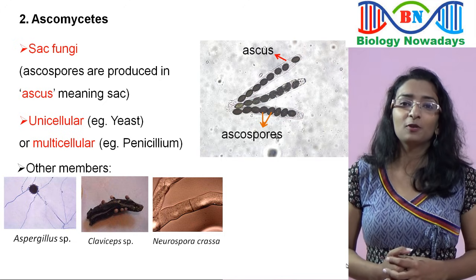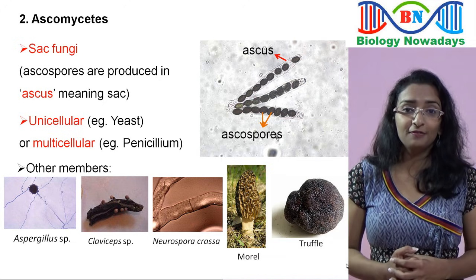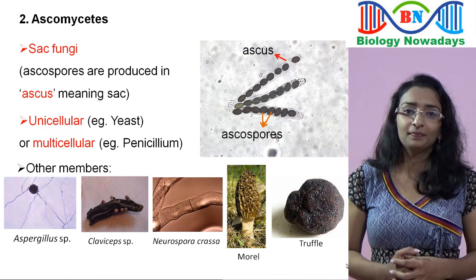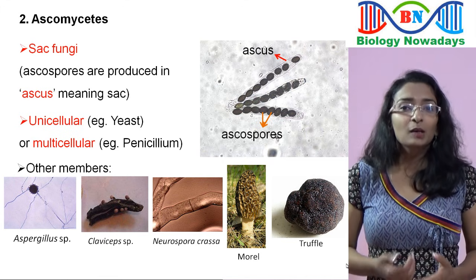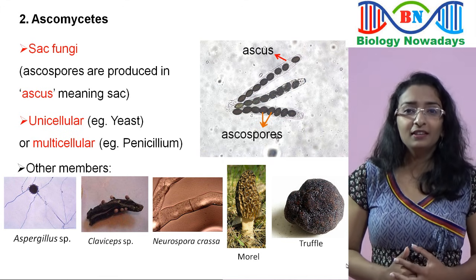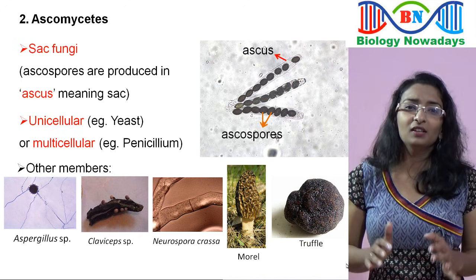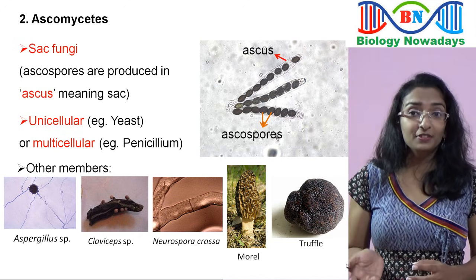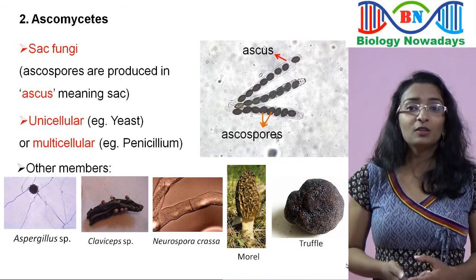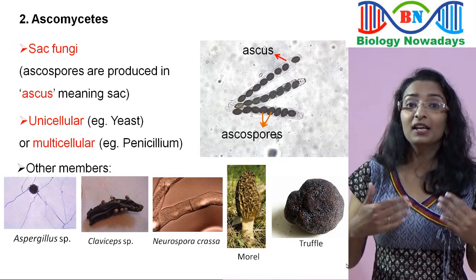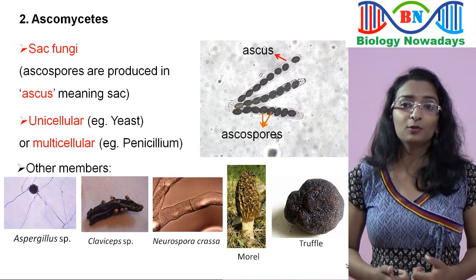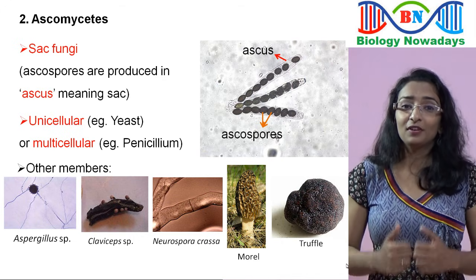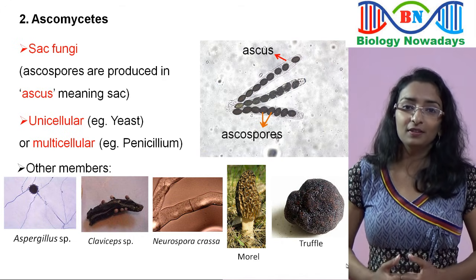Some members of Ascomycetes, like morels and truffles, are considered expensive foods. They are expensive because they are found in the wild and it is not easy to cultivate them commercially. The fruiting bodies of truffles grow underground, and trained dogs are used to find them using their characteristic smell, after which the truffles are dug out of the soil.